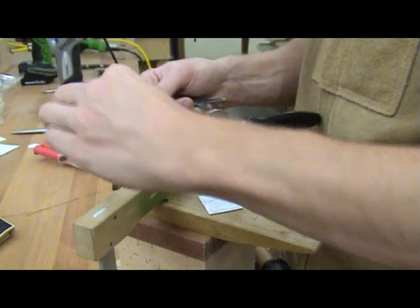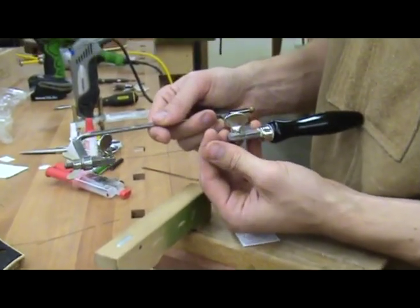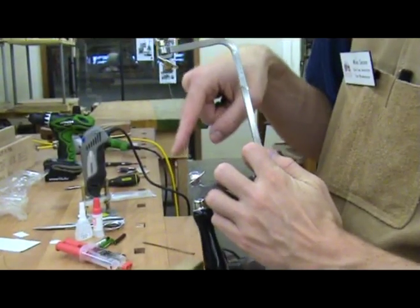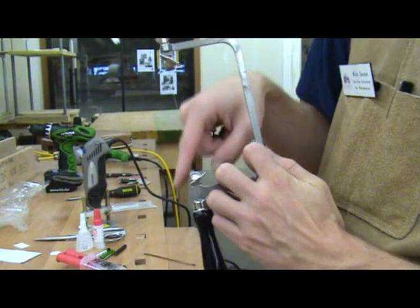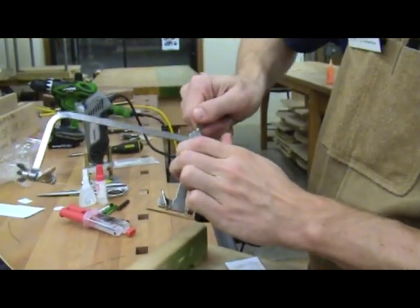This is a jeweler's saw, which is what you will use to cut out the inlay. There are over a dozen different sizes of saw blades that fit into the saw frame. I usually use a 3-0 sized blade. Make sure the blade is installed with the teeth facing outward and pointing down. You also need to put a fair amount of tension on the blade. It should make a nice ping sound when you pluck it.